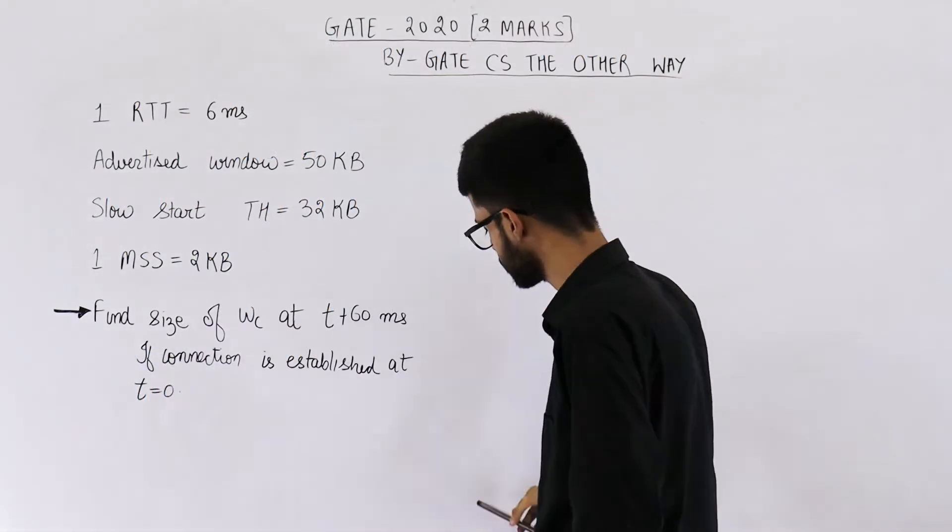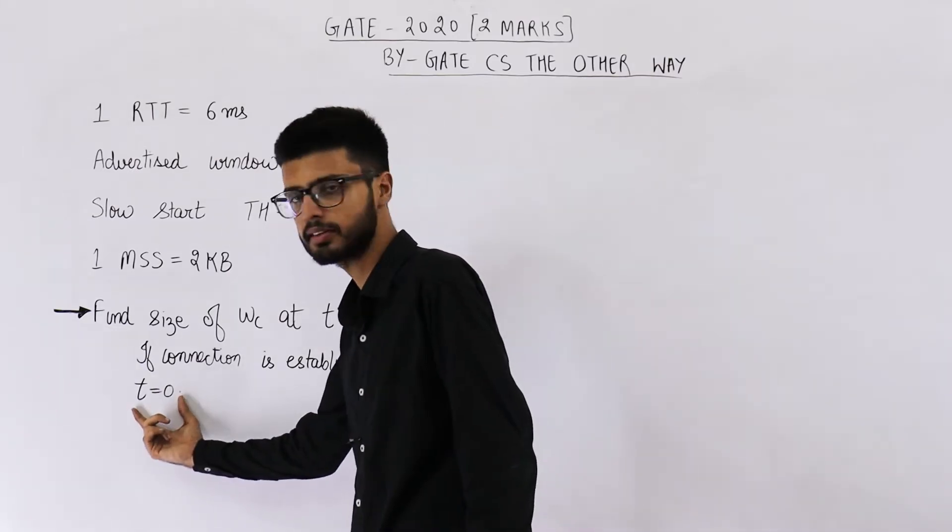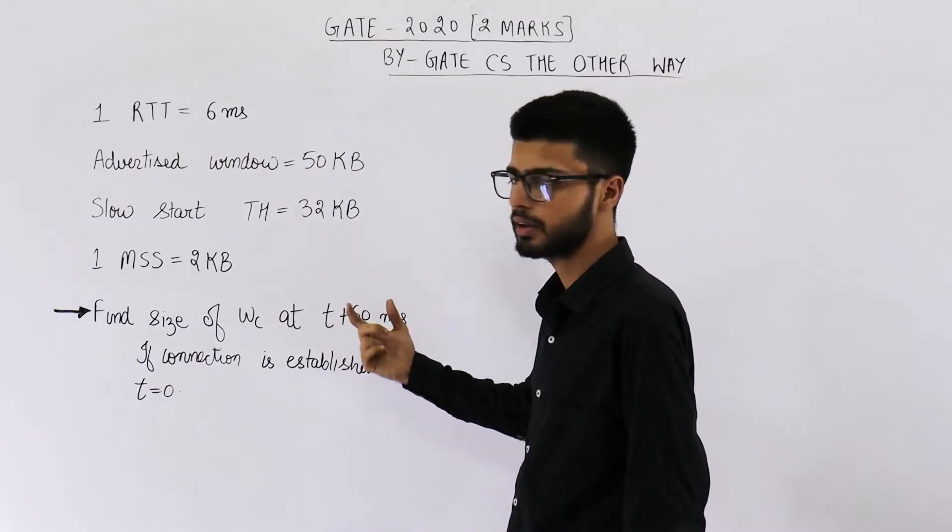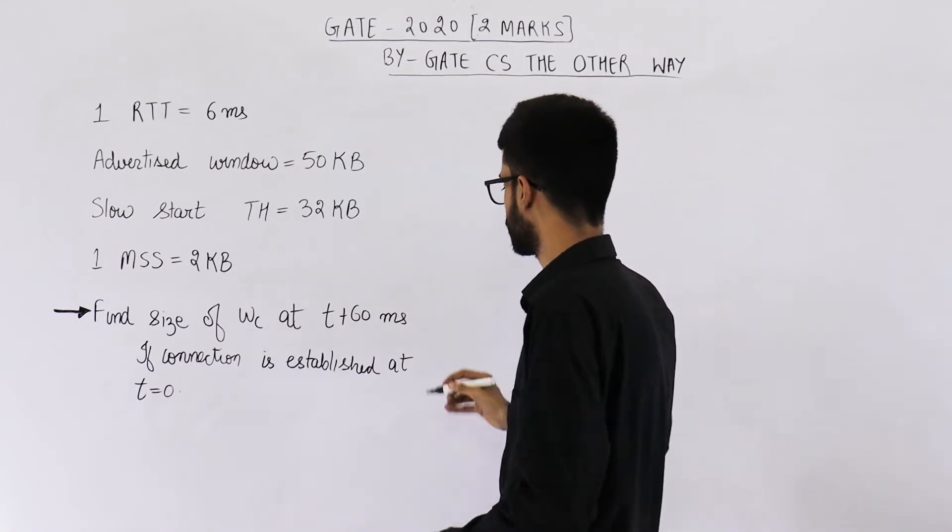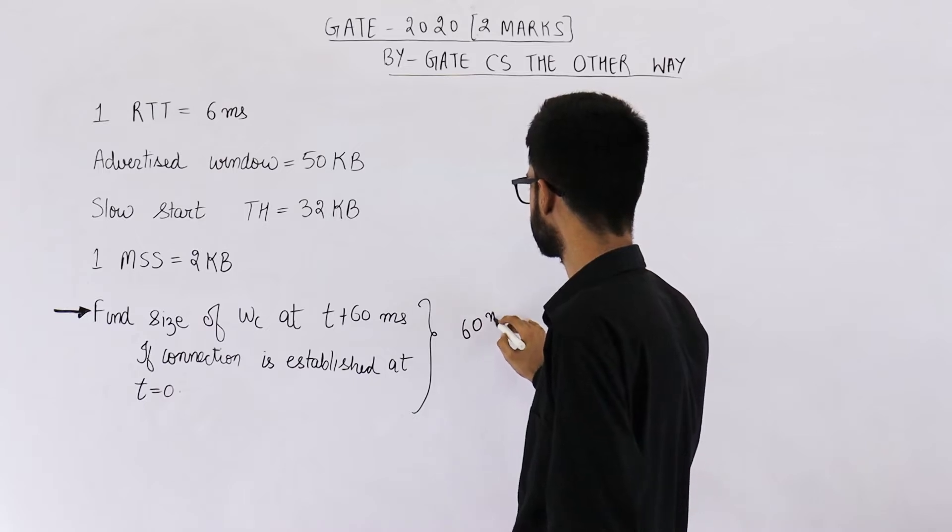So we want to find the size of congestion window starting from time t equals 0 to time t plus 60 milliseconds. So this is for a total of 60 milliseconds.